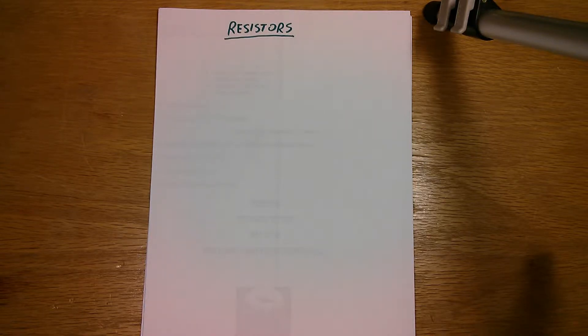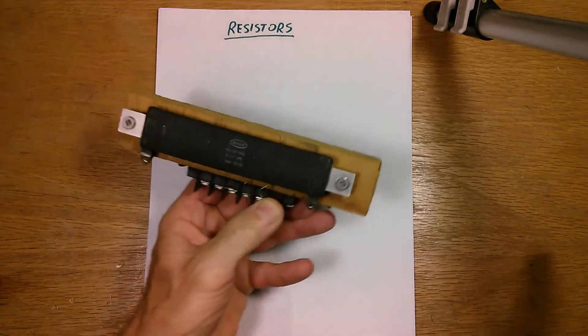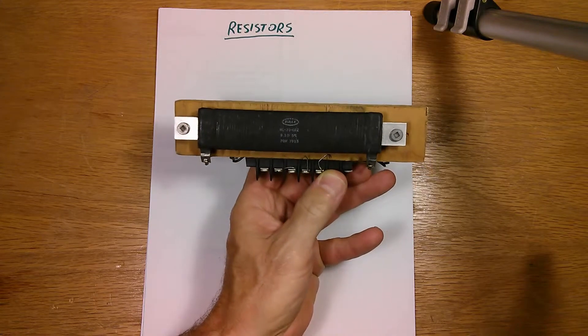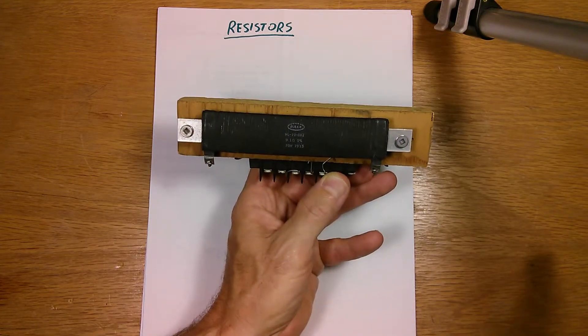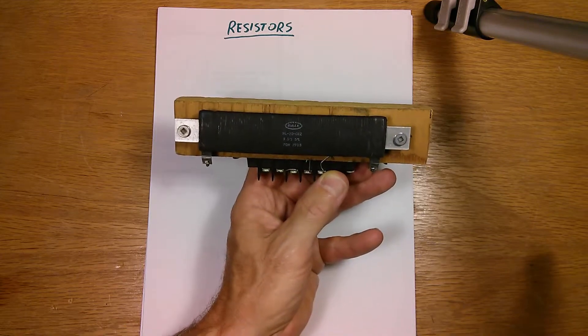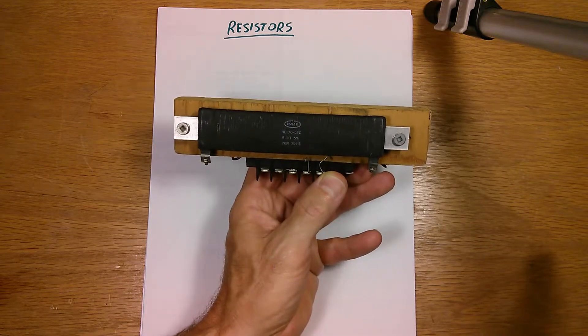So resistors can come in many different shapes and sizes. This is an example of a wire wound power resistor. This is 9.1 ohms and it's rated at 70 watts, so you can put a fair bit of current through this and not have it burn out.